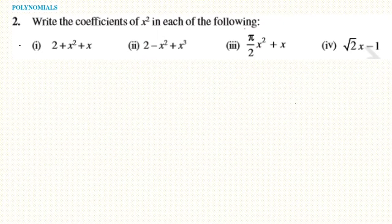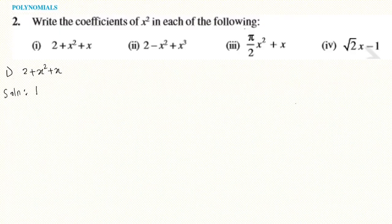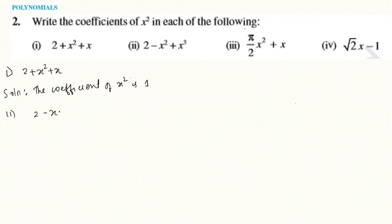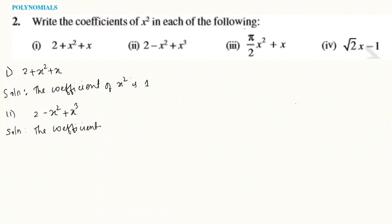Question 2: Write the coefficient of x squared. Number one: 2 plus x² plus x — the coefficient of x² is 1. Number two: 2 minus x² plus x³ — the coefficient of x² is minus 1.